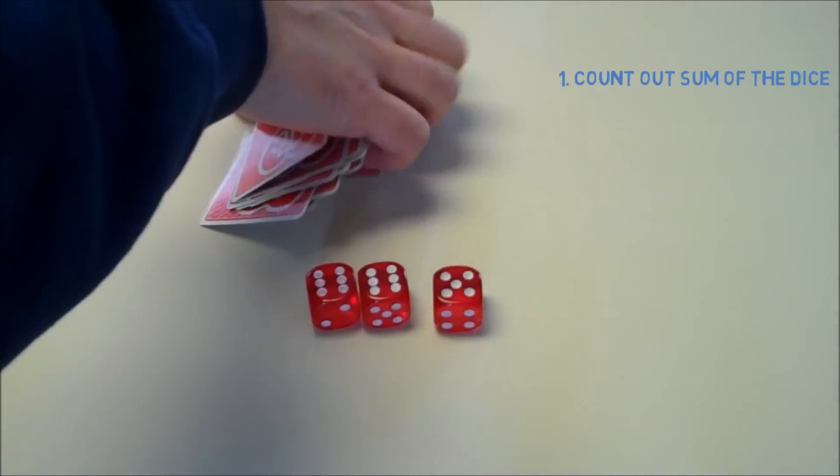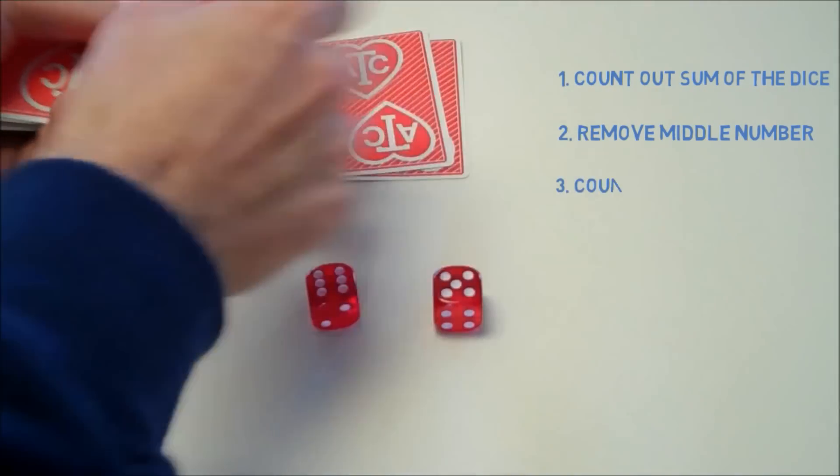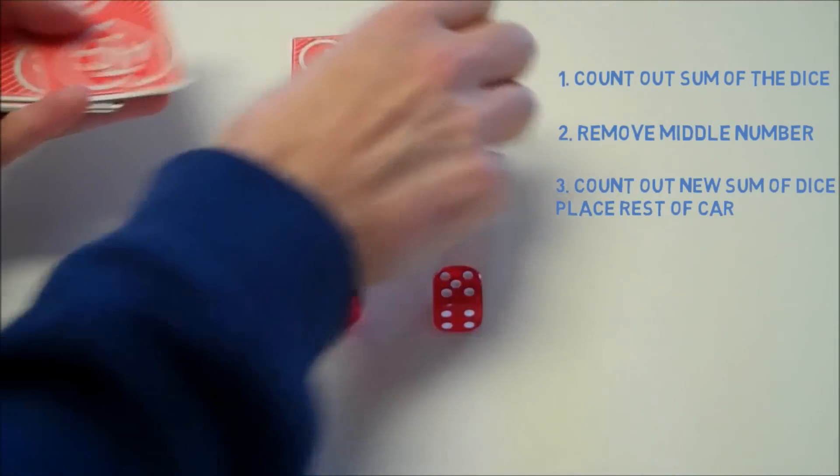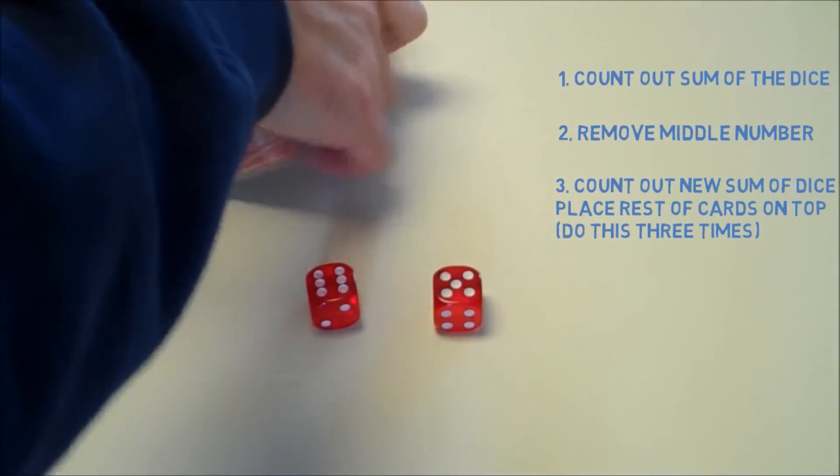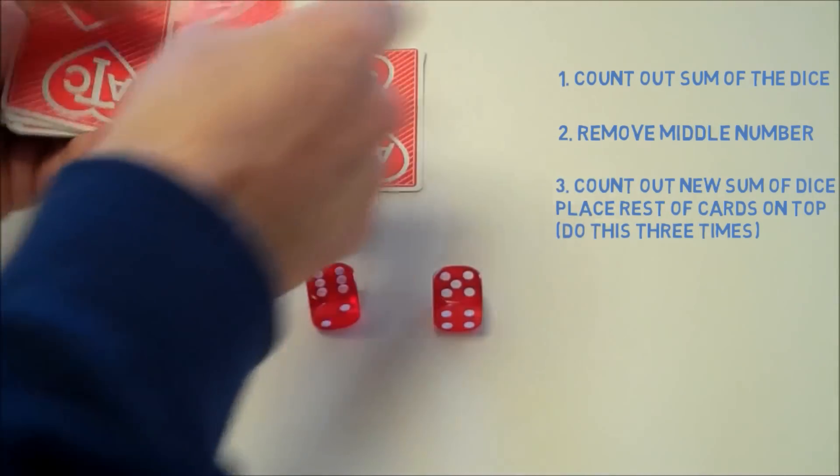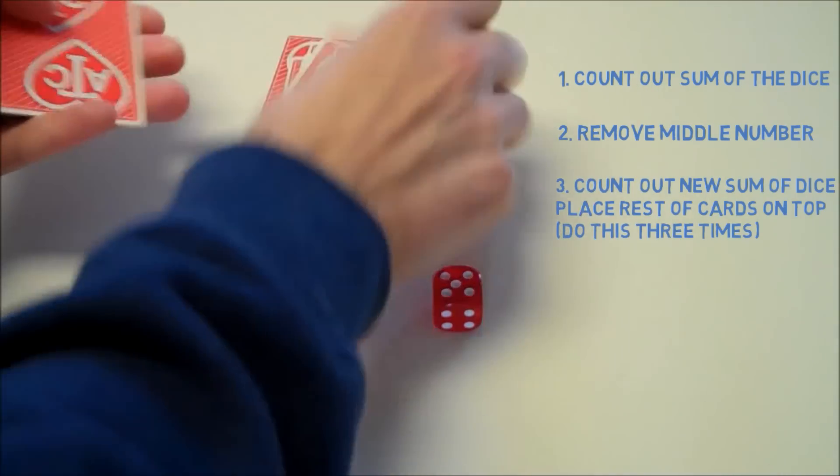Now we have six, six, and five. The middle number will be six, so we remove one of the sixes. So we're left with 11, and then we do the same thing. We count out 11 cards, we put the rest of the cards on top, and we do this three times.